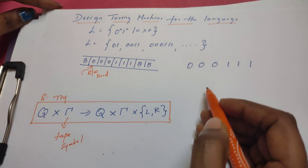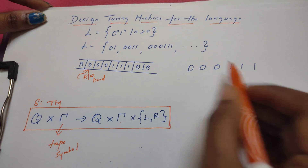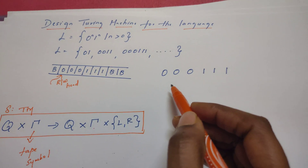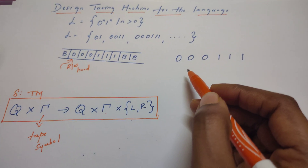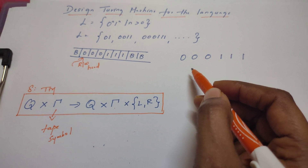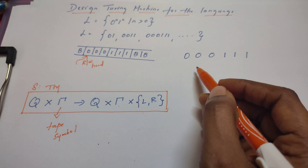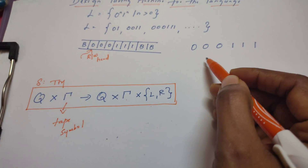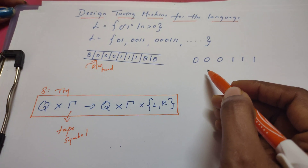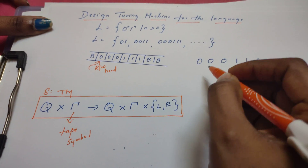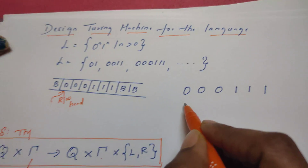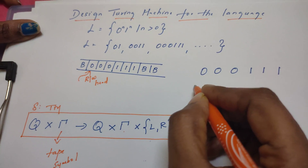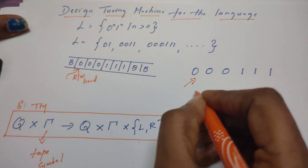Before designing the Turing machine, let us consider the logic. We should remember one important thing when designing any automata — whether a finite state machine, pushdown automata, or Turing machine — we always keep in mind the strings that belong to the language. We do not worry about strings that do not belong to the language. The read/write head always points to the very first symbol of the input.